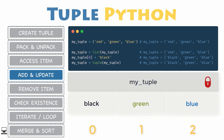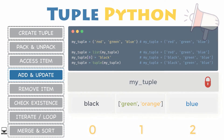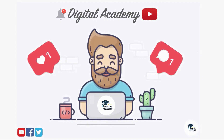Note that tuple immutability is applicable only to the top level of the tuple itself, not to its contents. For example, a list inside a tuple can be changed as usual with indexing, without even converting the tuple into a list first.